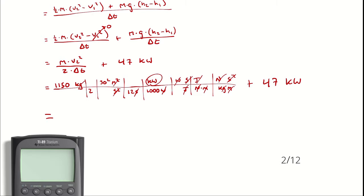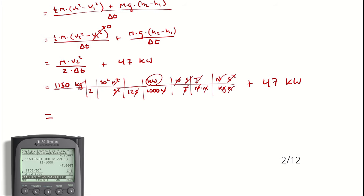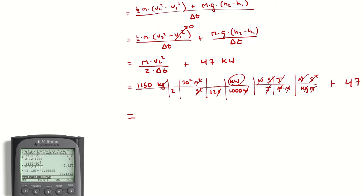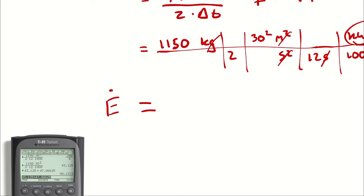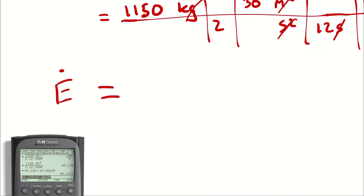Calculating: 1,150 times 30 squared divided by (2 times 12 times 1,000) gives 43.125 kilowatts. Adding that to 47.0063 kilowatts gives approximately 90.13 kilowatts. So to accomplish this process, the engine requires on average 90.13 kilowatts — about 43 kilowatts going into increasing kinetic energy and about 47 kilowatts into increasing potential energy.